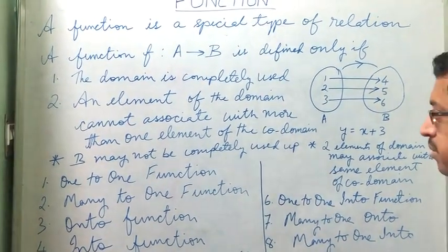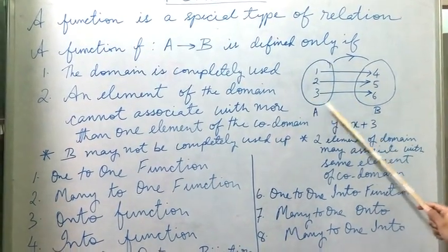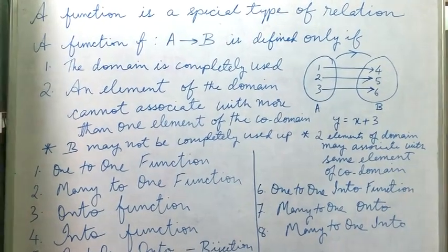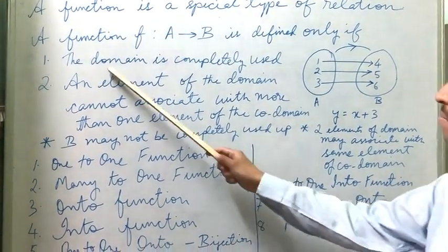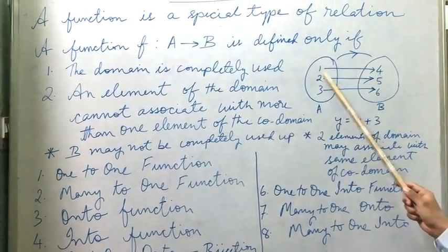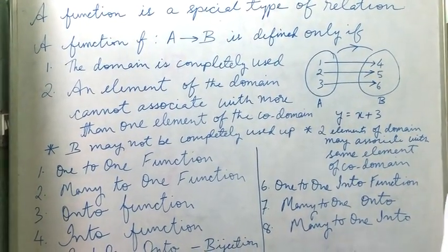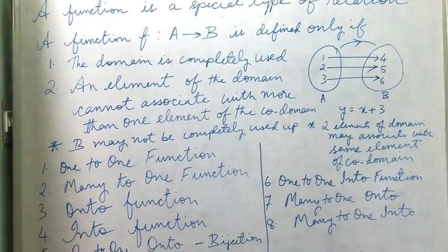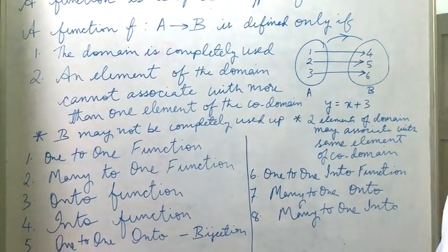The domain here contains 1, 2, and 3. The domain being completely used means we have used every one of them and got a result. In this case, 1, 2, 3 have all been used with no other elements remaining, so it satisfies the first condition.